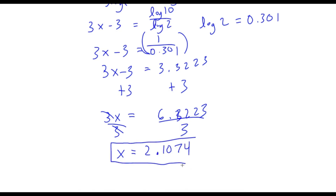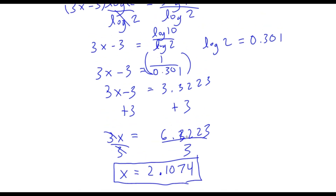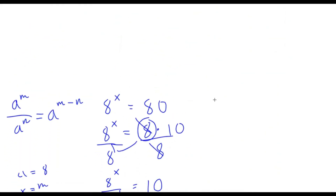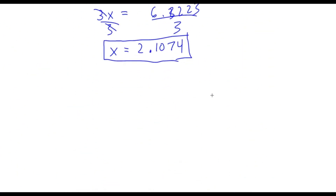So x equals 2.1074. Our original equation was 8 to the power of x equals 80. Plugging 2.1074 into a calculator, 8 to the power of 2.1074 is indeed approximately equal to 80, confirming our answer.